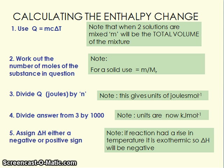Once you've worked out Q, you then need to work out the number of moles of the substance in the question. If you have a solid, use moles equals mass divided by Mr. If you have a solution, use moles equals molarity times volume, remembering to divide by 1000 if your volume is in centimetres cubed. Then divide Q in joules by the number of moles to get joules per mole. Divide by 1000 to convert to kilojoules per mole, and then assign delta H a negative sign for a temperature rise (exothermic) or a positive sign if the temperature went down (endothermic).